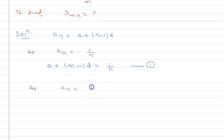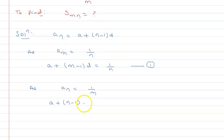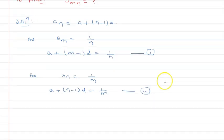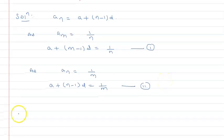Similarly, since a_n = 1/m, I can write: a + (n-1)d = 1/m. I will call this Equation 2. Now if I subtract Equation 2 from Equation 1: